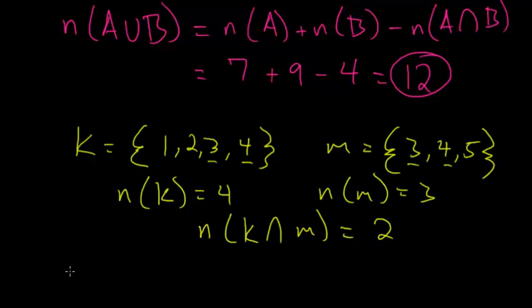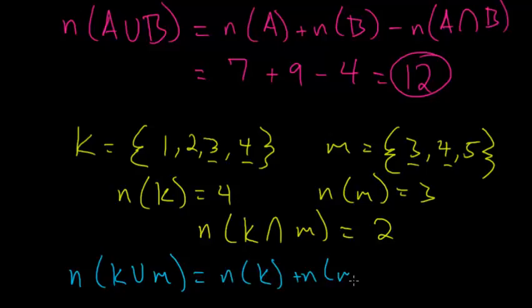To figure out the number of elements in the union of sets K and M, we just need the number of elements in K plus the number of elements in M minus the number of elements in the intersection of K and M.